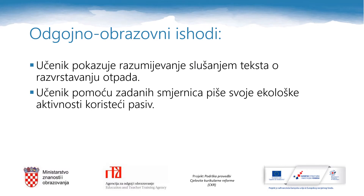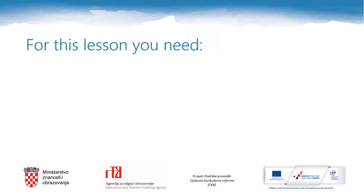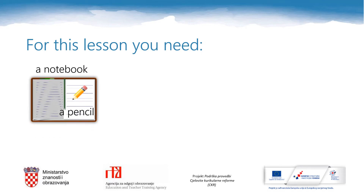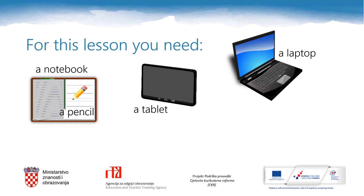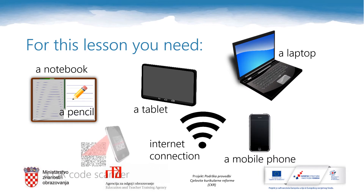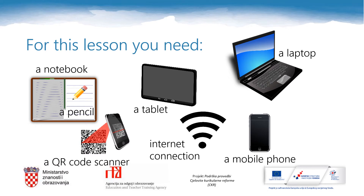By the end of this lesson you will be able to understand a listening text about waste sorting and you will be able to write your own eco-activities using the passive voice. For this lesson you need a pencil and a notebook, a tablet or a laptop or a mobile phone with internet connection and a QR code scanner.